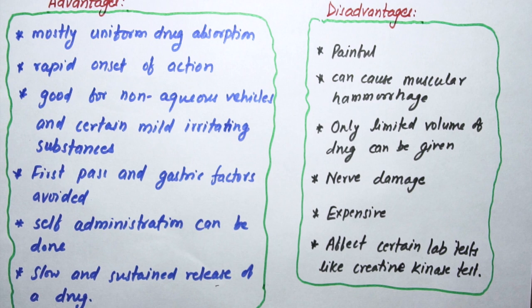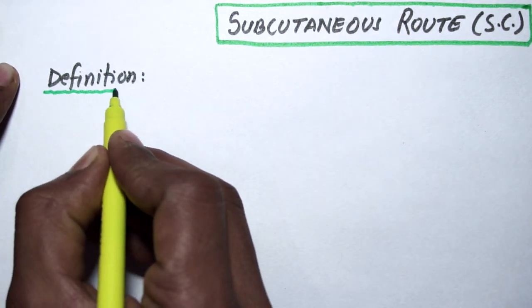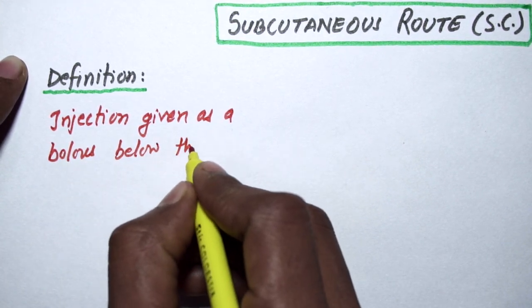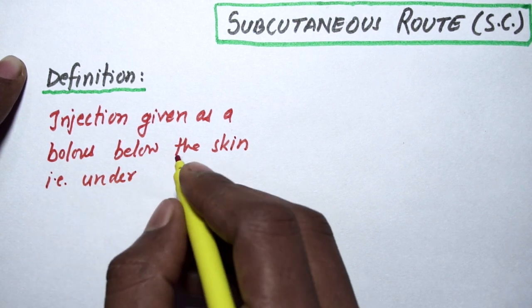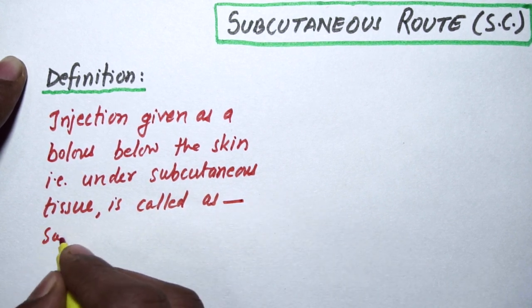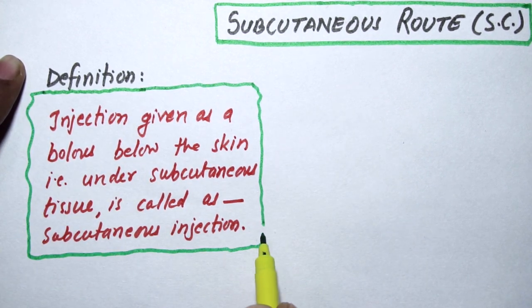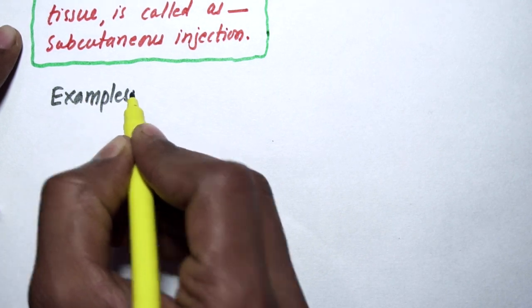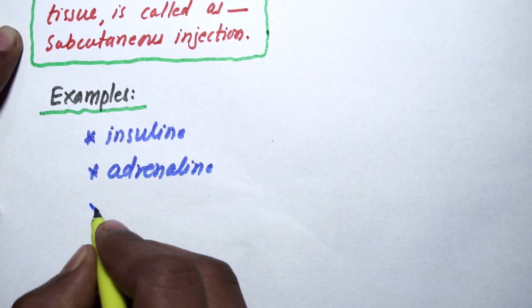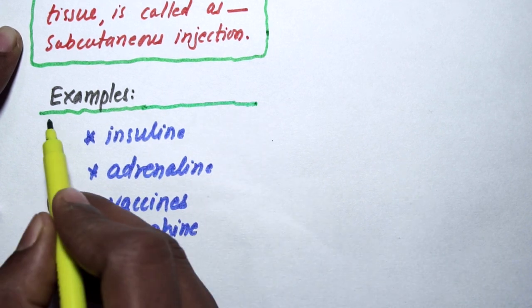Now we will discuss subcutaneous route. The definition: injection given as a bolus below the skin, under subcutaneous tissue, is called subcutaneous injection or SC. Examples include insulin, adrenaline, many vaccines, morphine, etc.